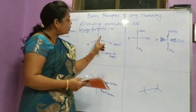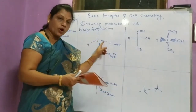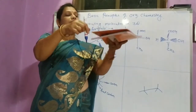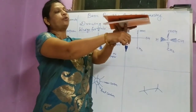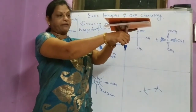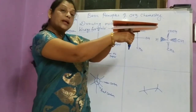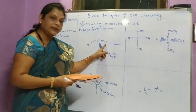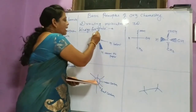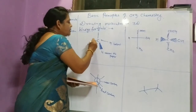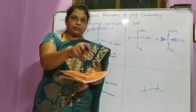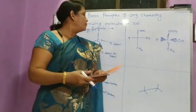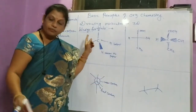The dotted wedge means that when the atom of an element is bonded to the given compound or element below the paper, it is represented by the dotted wedge. The single line is used to represent bonds in the same plane — atoms bonding with the element in the same plane. That is the wedge formula.